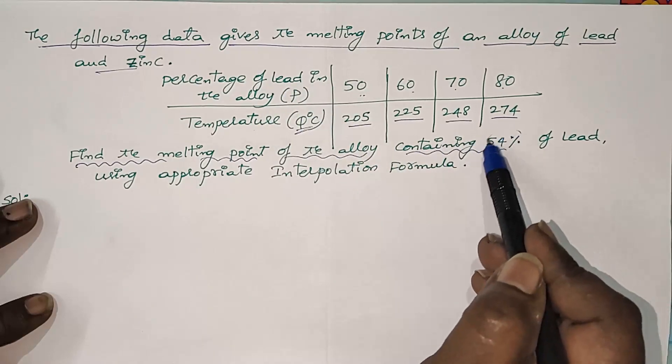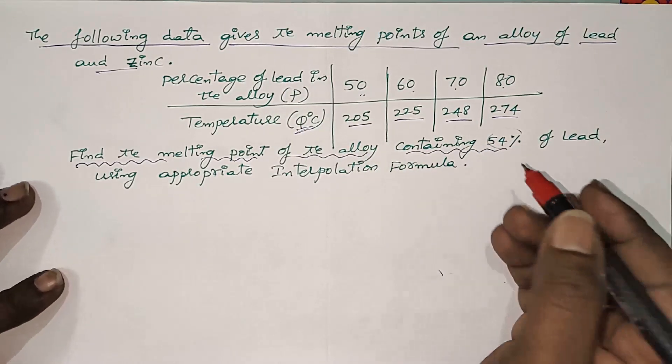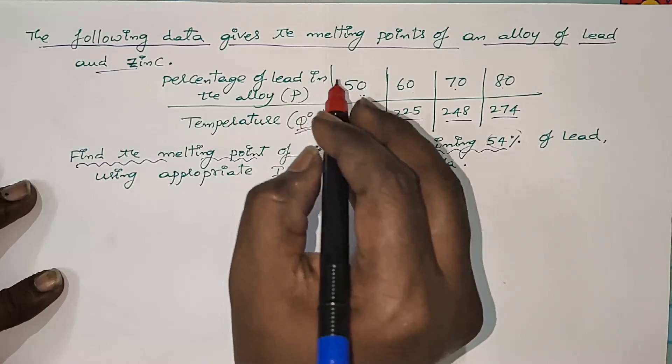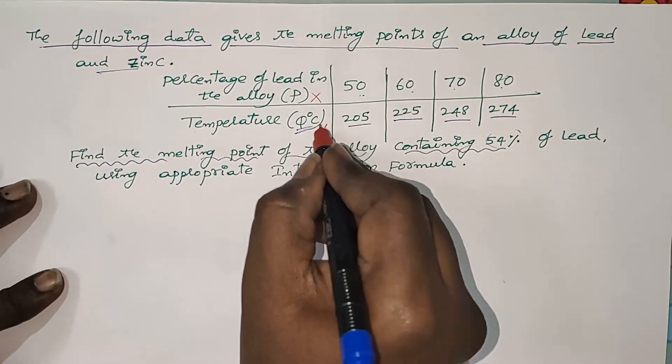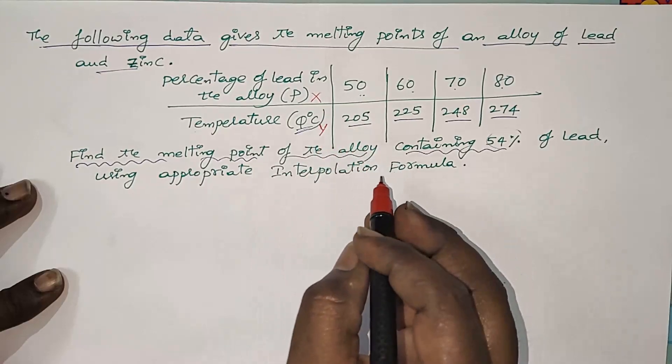You can take percentage of lead in the alloy as X values and the temperature values as Y values. So it is enough to find out Y of 54.